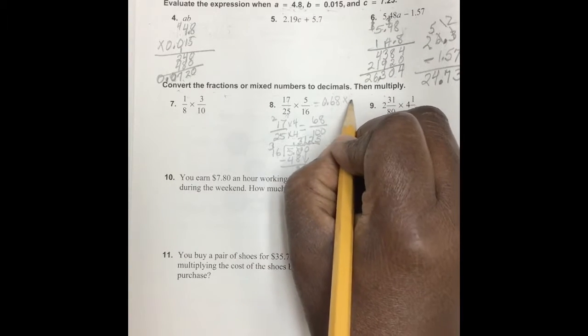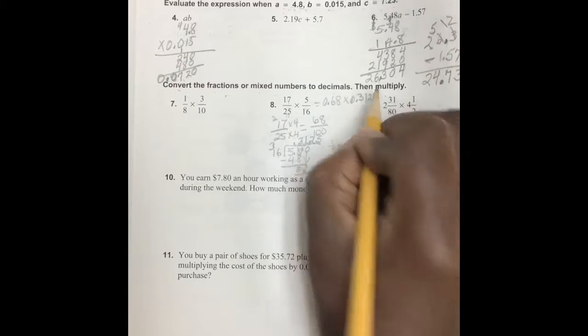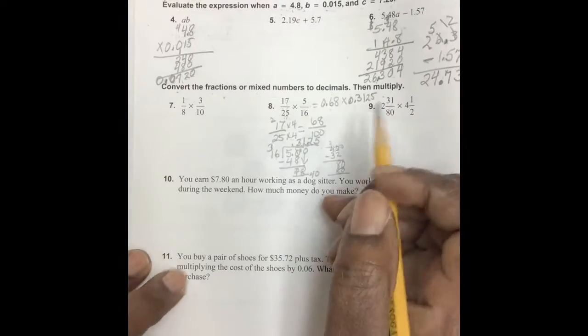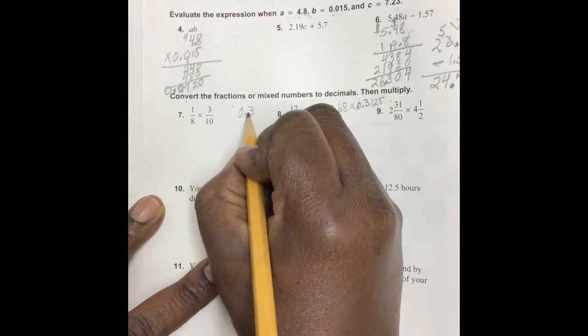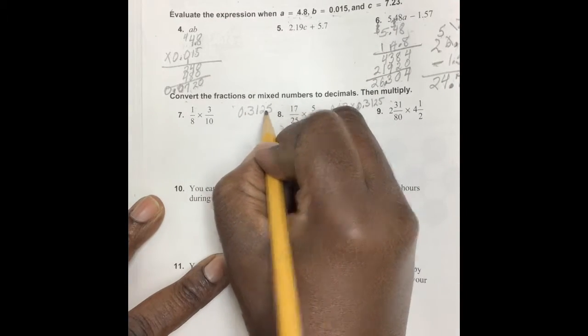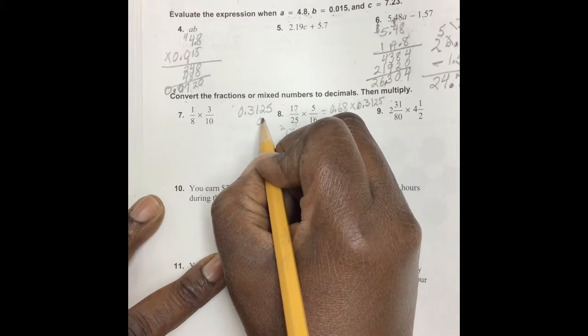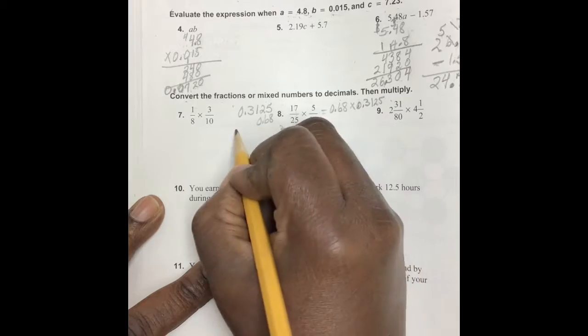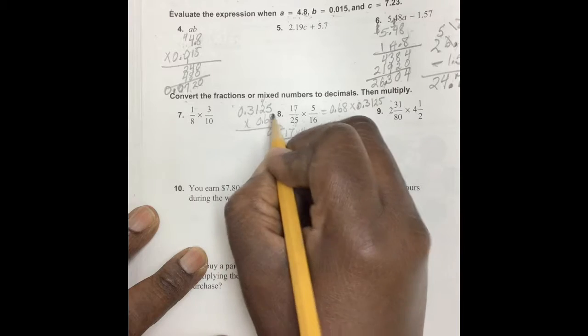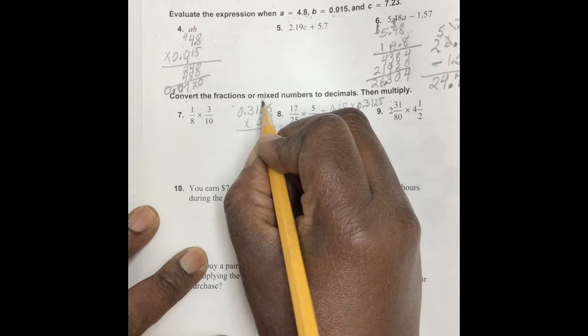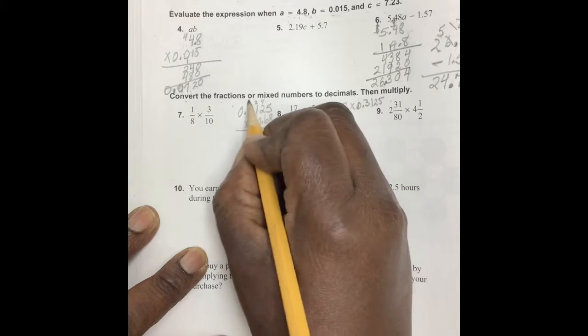So then this is times 3.125. Okay, all right, so in this workspace over here we're going to put those digits. 3, 1, 2, 5 times 1, and multiply. We discover this is 40, that's 16 plus four is 20, that's eight plus two is ten.